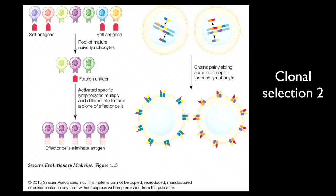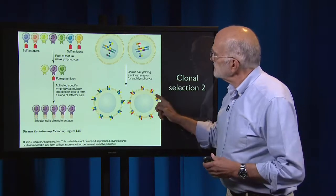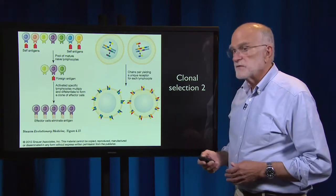It is then activated and multiplies, forming a clone of effector cells. The fact that each of them is expressing that specific antibody is indicated by the fact that all of these are purple. The chains produced are pairing to form a unique receptor for each lymphocyte. You can see that this lymphocyte is expressing exactly the same receptor on its surface, while a different lymphocyte with a different set of somatically recombined proteins expresses its unique receptor on its surface.